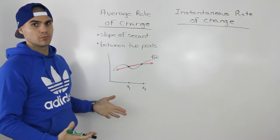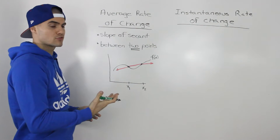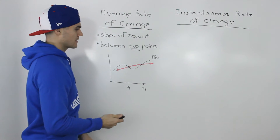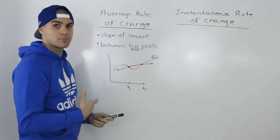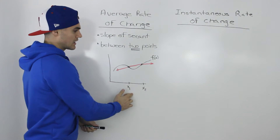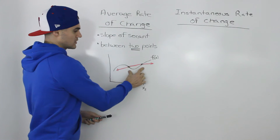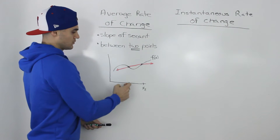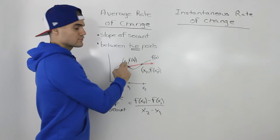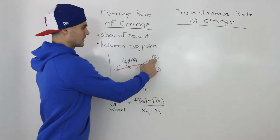The average rate of change is basically the slope of a secant line in a function, and remember it's always between two points. So when they're asking for an average rate of change, there will always be two points given. For example, let's say you have a function f(x) — a common thing it's going to represent in this section is a position-time function. The two points occur at x1 and x2, so the coordinates are (x1, f(x1)) and (x2, f(x2)).